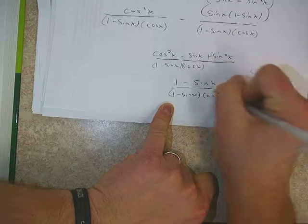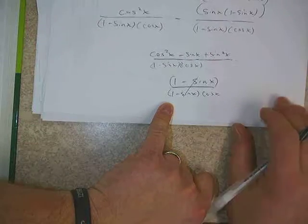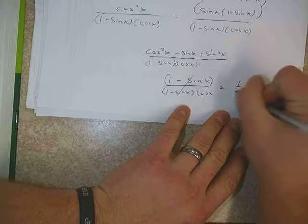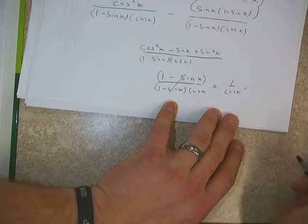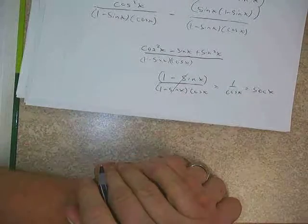And on the bottom, I have 1 minus sine x, cosine x. And since these are both the same, I can cross them out. And with that said, I'd have 1 over cosine x. And finally, I'd change that to secant.